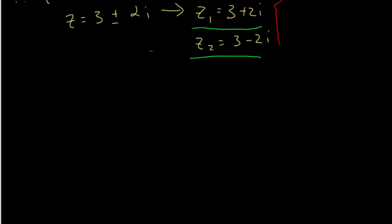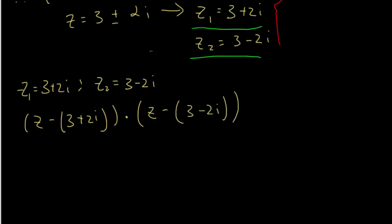So we have z1 is equals to 3 plus 2i, and then z2 is equals to 3 minus 2i. Now we need to put them back into a factor form. So that will be z minus bracket 3 plus 2i, and then multiply by z minus bracket 3 minus 2i equals 0.